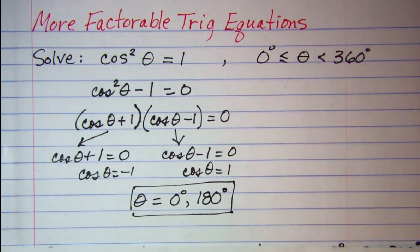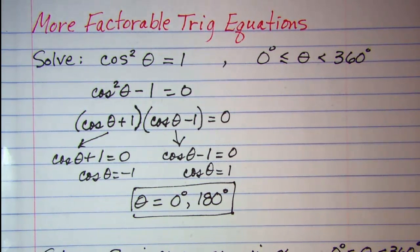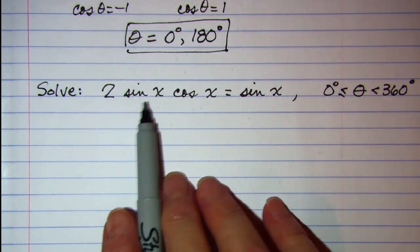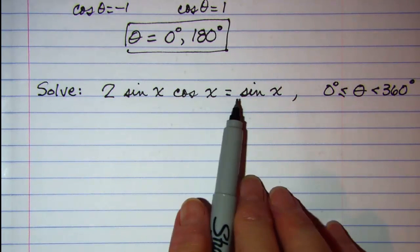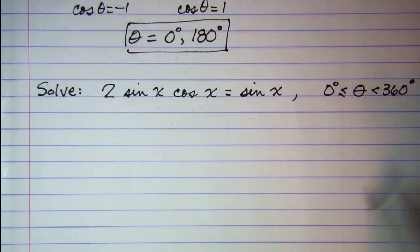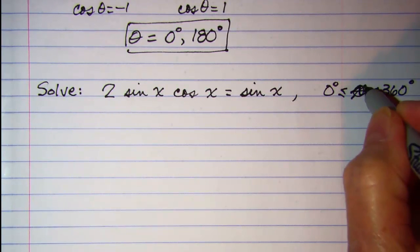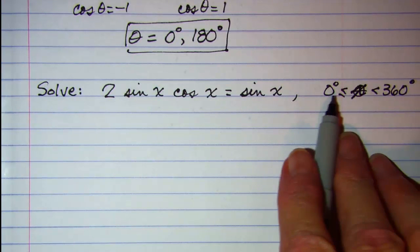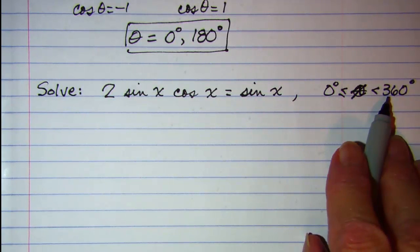Let's do another one. We're asked to solve 2 sine x cosine x equals sine x, where x is between 0 and 360 including the 0 and 360.